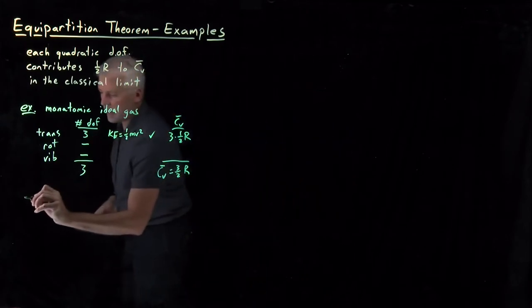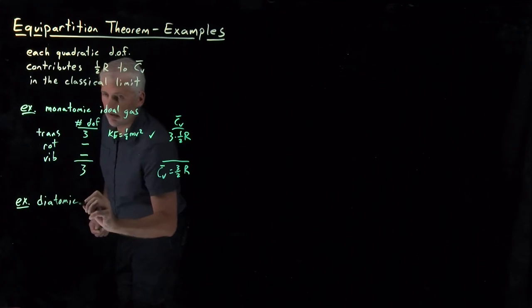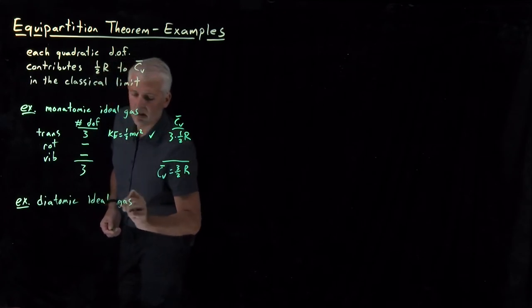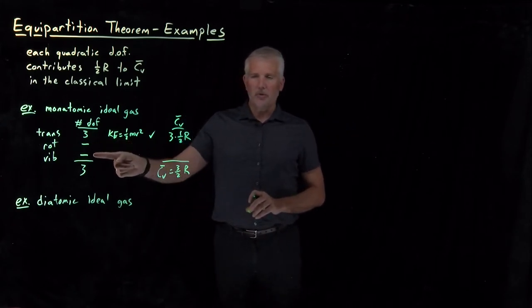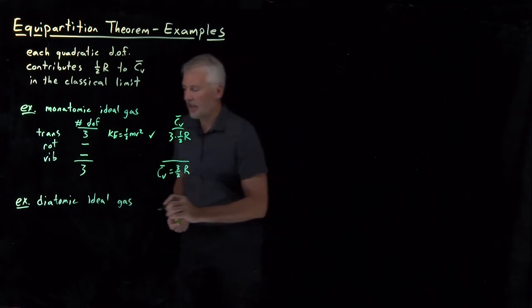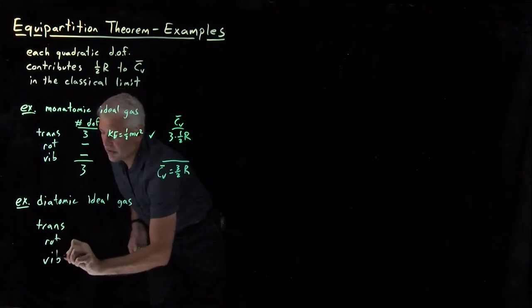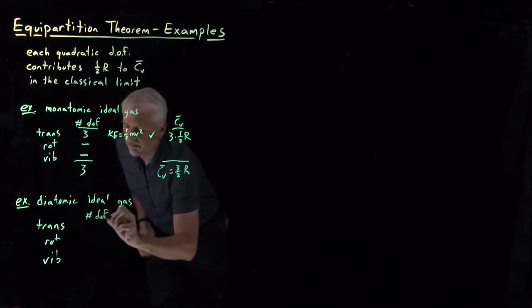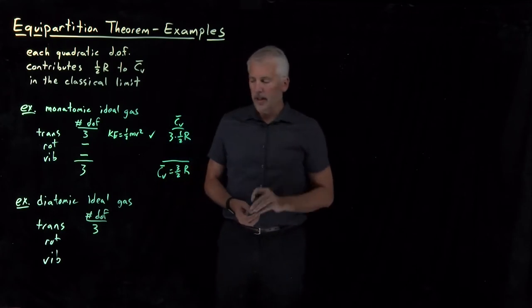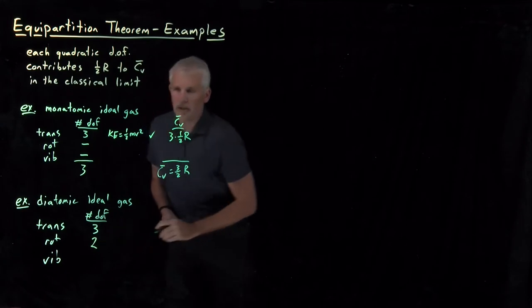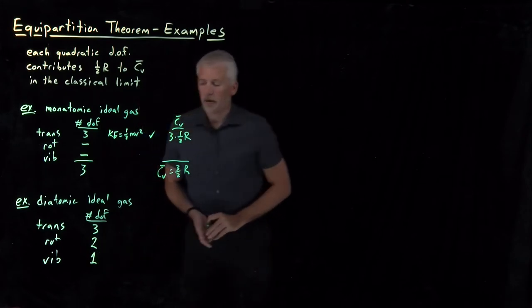To see how that works for a more complicated case, consider a diatomic molecule. We need not just the particle-in-a-box model, but also the rigid rotor to describe its rotations and the harmonic oscillator to describe its vibrations. Going through the same process and counting translational, rotational, and vibrational degrees of freedom: there are three translational degrees of freedom, and since it's a linear molecule, only two rotational degrees of freedom (theta and phi), and one vibrational degree of freedom from the single bond.